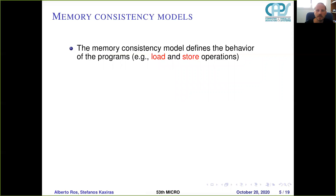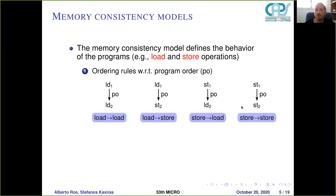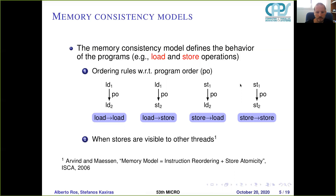The memory consistency model defines the behavior of programs — what value a load will get and what value a store will write to memory — with two rules. First are the ordering rules with respect to program order, or PO. So if in a program we have a load followed by another load in program order, and the first load performs before the second, we say the consistency model respects the load-to-load order. The same applies for load-to-store, store-to-load, and store-to-store. These four rules summarize the ordering rules of the consistency model.